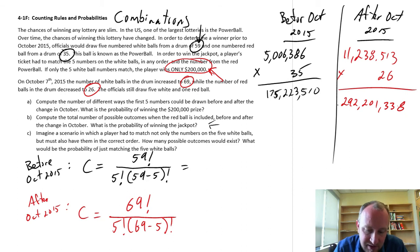Now what if, let's just imagine a scenario in which the player had to match not only the numbers on the five white balls, but also have them in the correct order? How many possible outcomes would exist? What would be the probability of just matching the five white balls?